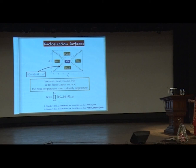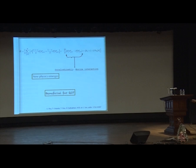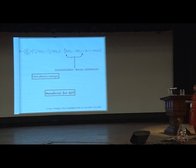There is also a factorization surface which we analytically proved: in this surface the state is a product state, so it is useless for quantum information. Within the entire region there are surfaces where states prepared on them are not useful for quantum information. Two days ago we posted a paper showing that adding Dzyaloshinskii-Moriya interaction leads to interesting physics like chiral phase and gapless phase, also important for quantum information processing.